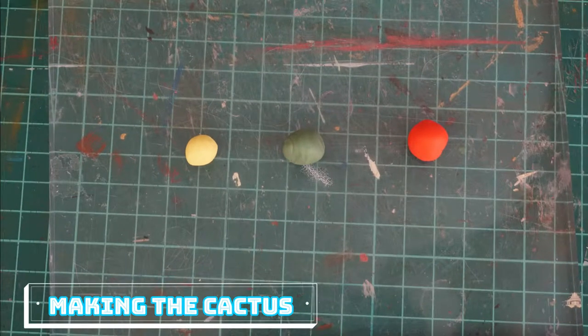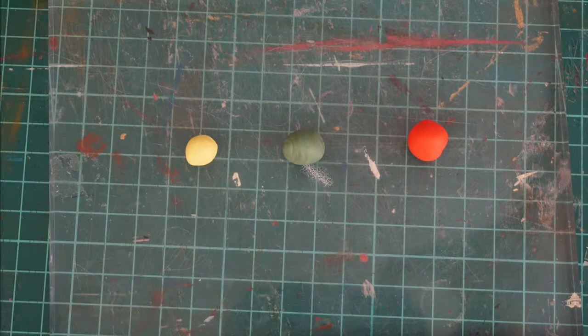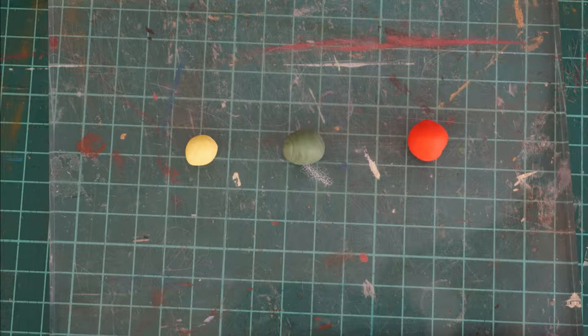Next, we are going to make different kinds of cacti. For this one, you will need yellow, green, and red polymer clay.